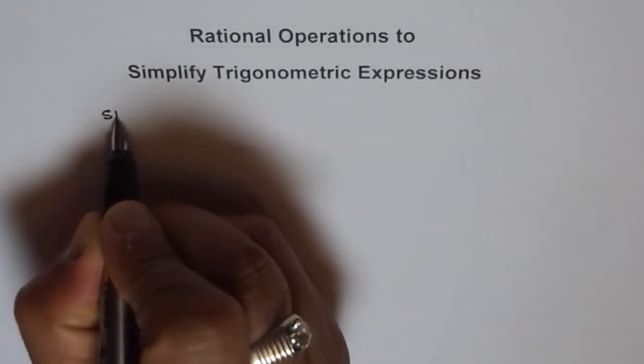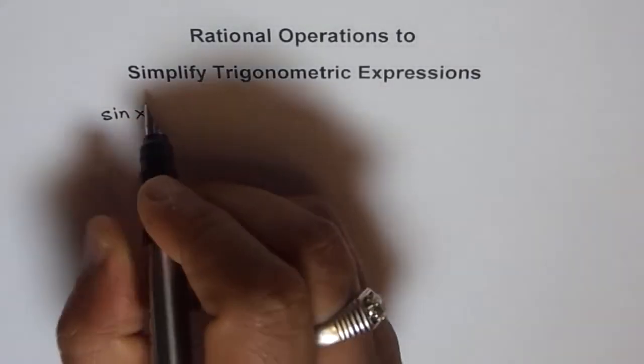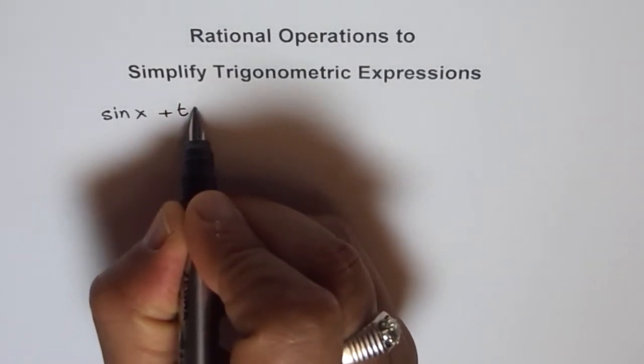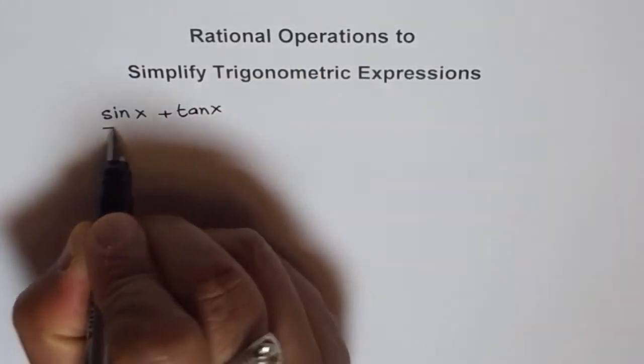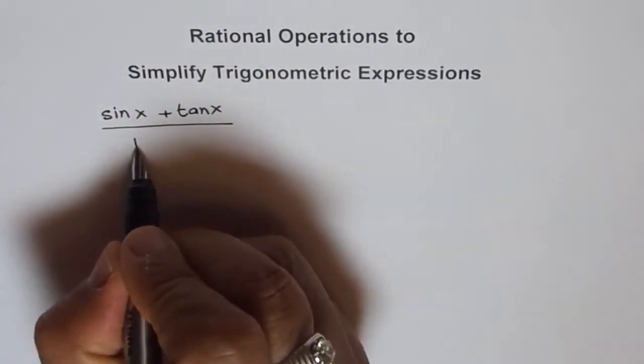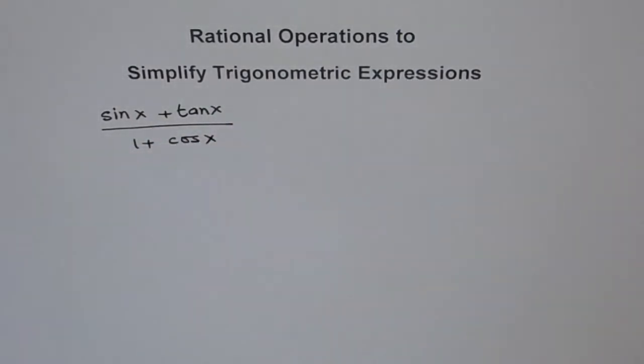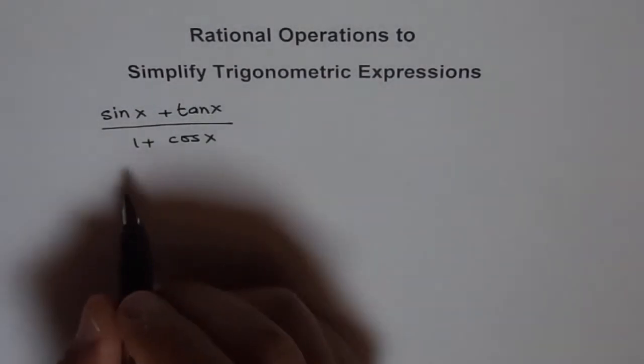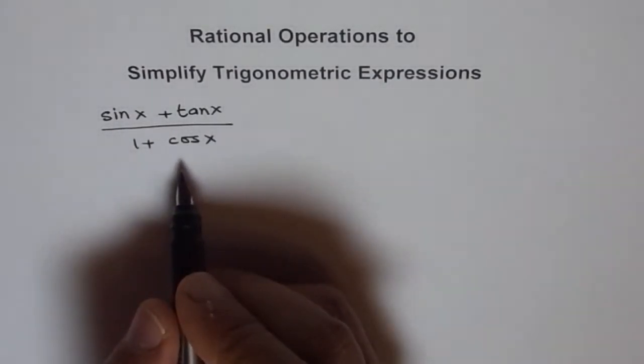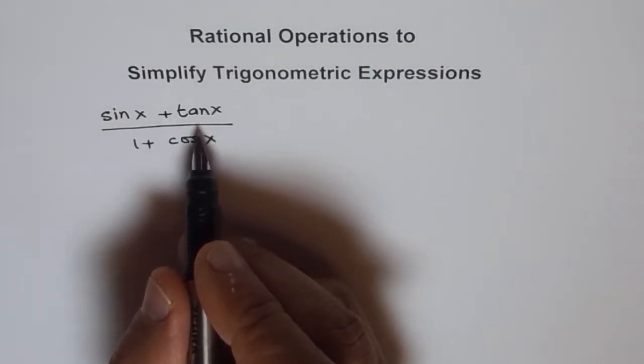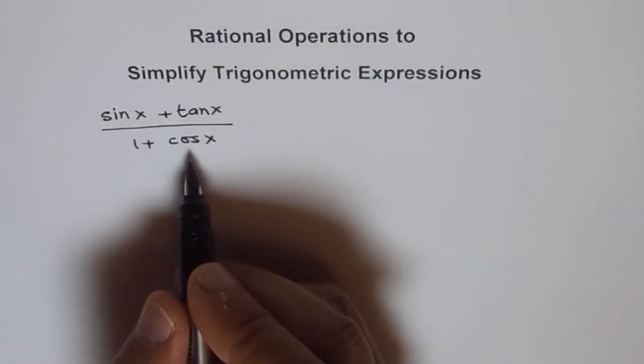Let's say we have sin x plus tan x over 1 plus cos x. Now, to simplify such an expression, while most of the terms are in sin and cosine, let's split tan and write it in terms of sin and cosine.